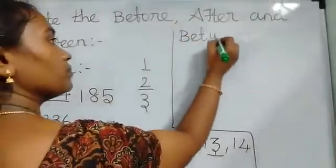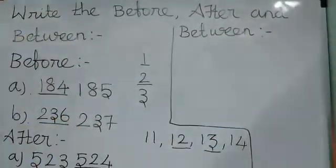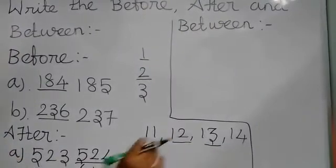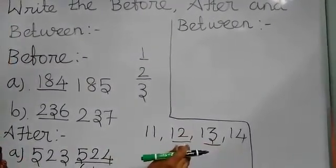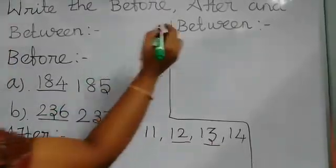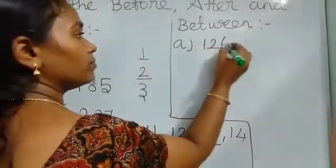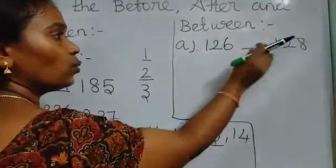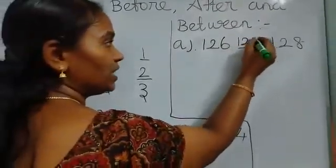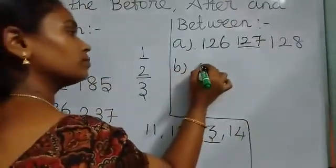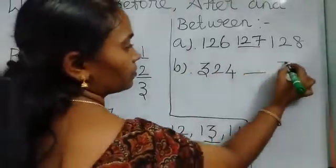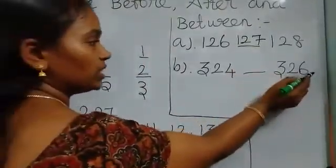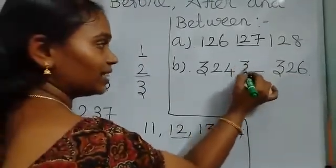Now see between numbers. What is the meaning of between? Between means the center number. Here: 11, 12, 13. Between 11 and 13, what is the between number? 12 — 12 is the center, the between number. See: 126 and 128 — what comes between? 127. See: 324 and 326 — what comes between? 325.